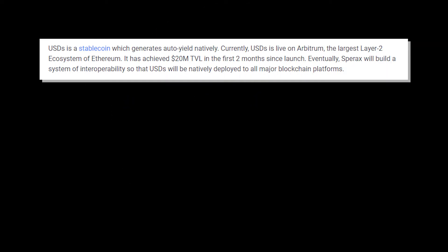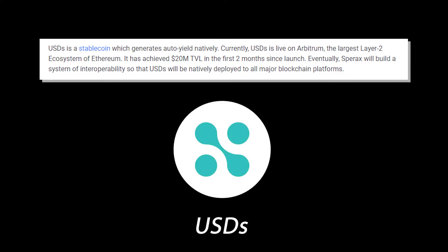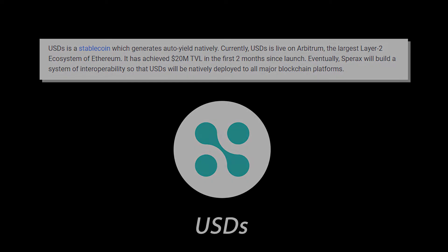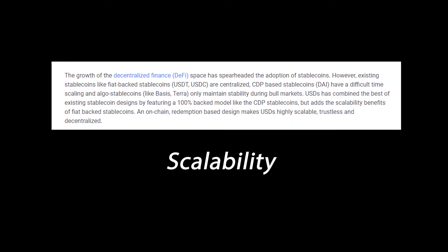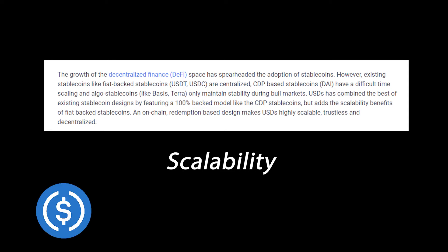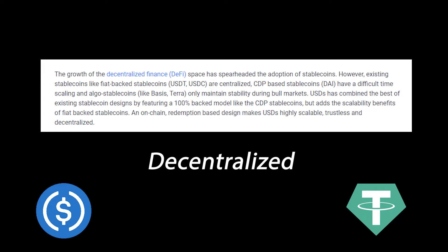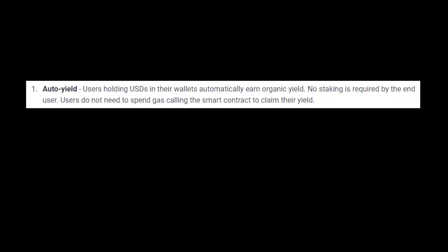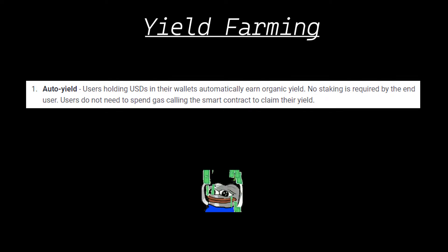So what exactly does Sparex Protocol do? Sparex Protocol has built a CDP stablecoin on the Arbitrum network that aims to solve a few of the problems faced by other stablecoins in the space. Sparex's USDS attempts to have the scalability of centralized stables like USDC and USDT while maintaining the decentralized nature of stables like MakerDAO's DAI. It also includes an automated yield generation mechanic, which ensures that users' positions slowly grow over time with the help of yield farming.